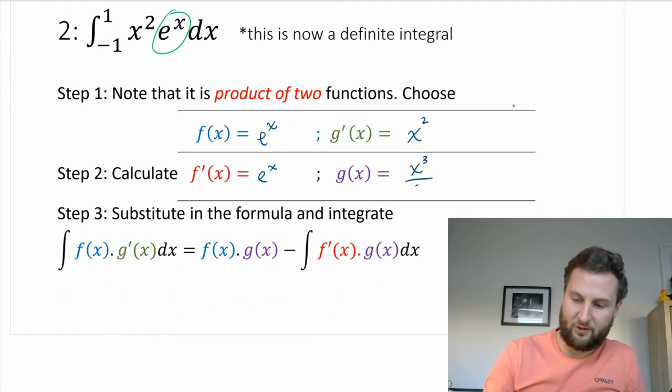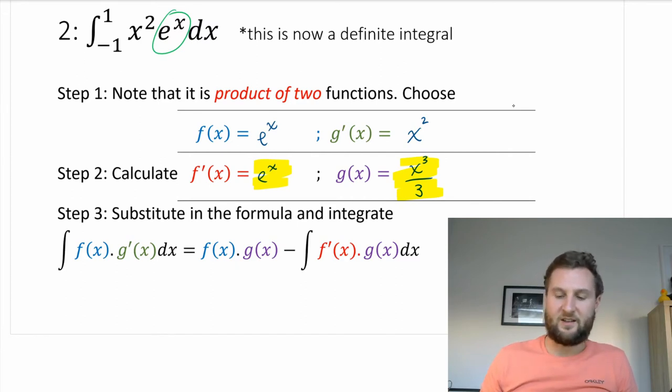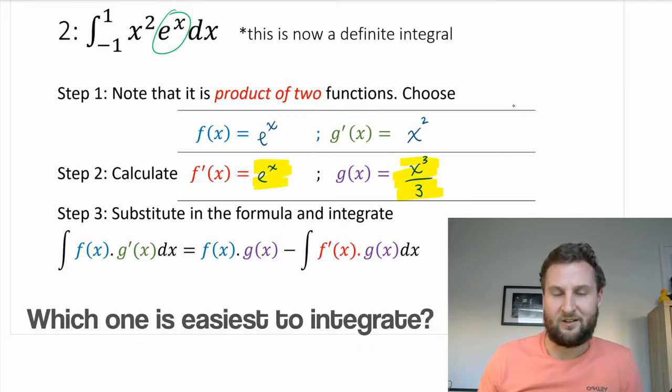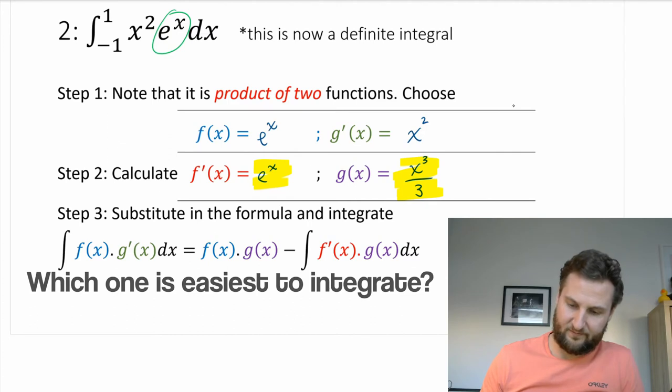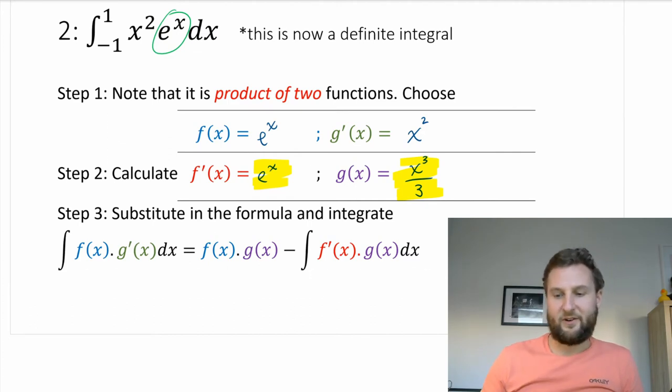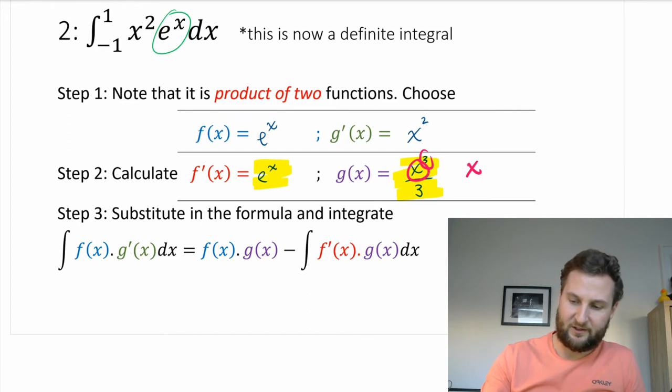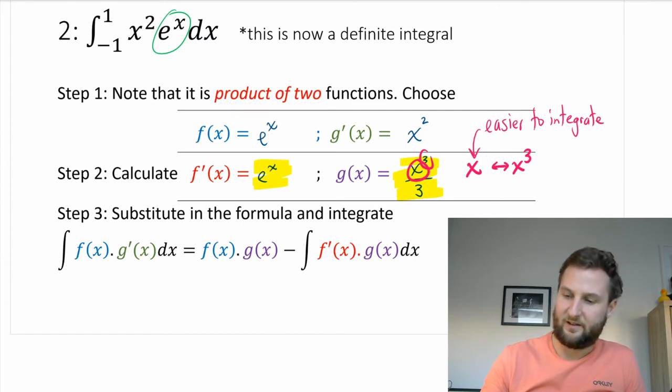So let's try f at x as e to the x, the derivative, e to the x. And then let's put x squared here. Integrate, I get x cubed over 3. And then my second integral is e to the x times x cubed over 3. So just contrasting these two scenarios, think about which one would be easier to integrate. So in the first option, we had x by itself times e to the x. Now we have x cubed. So it's x compared with x cubed. So hopefully you chose the first option as the easier to integrate.